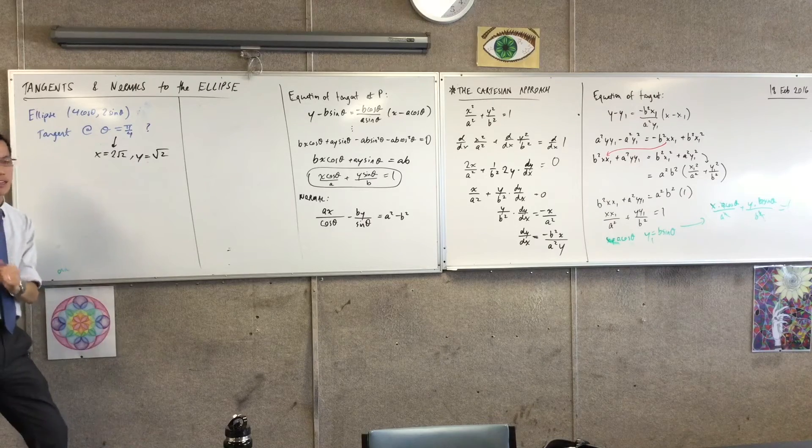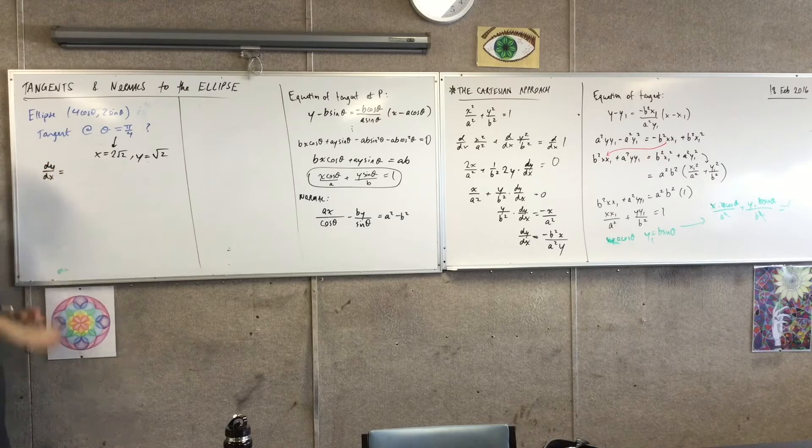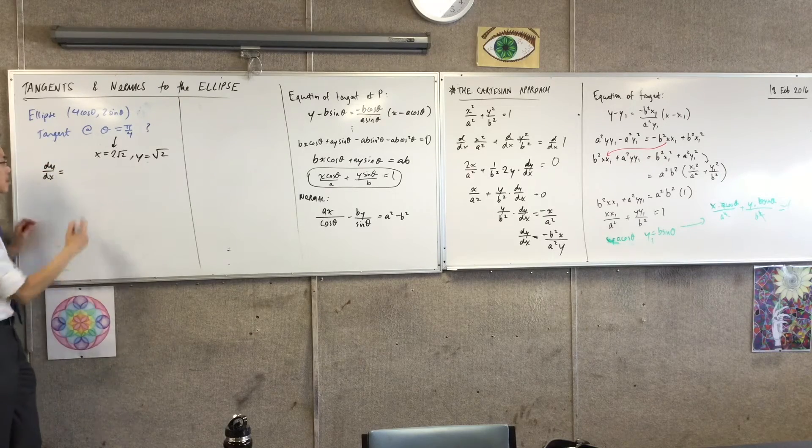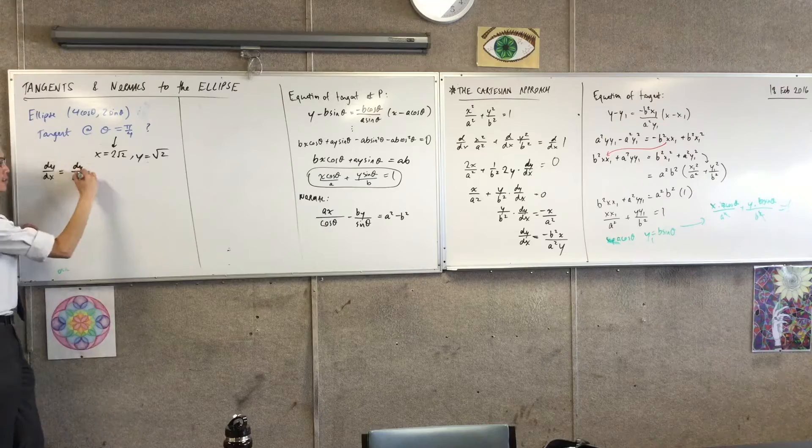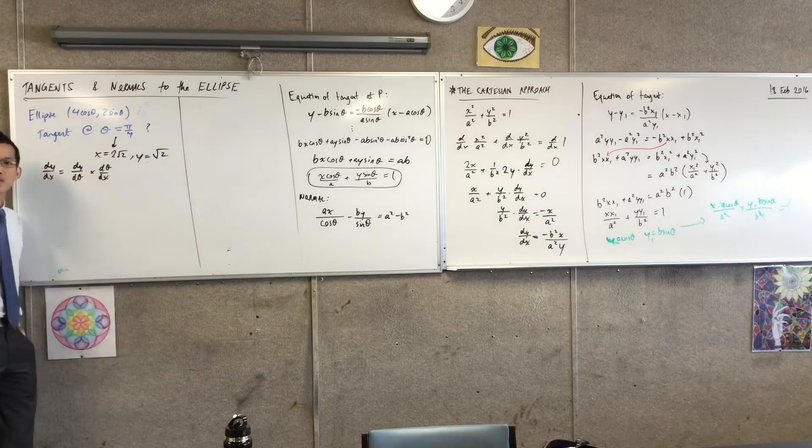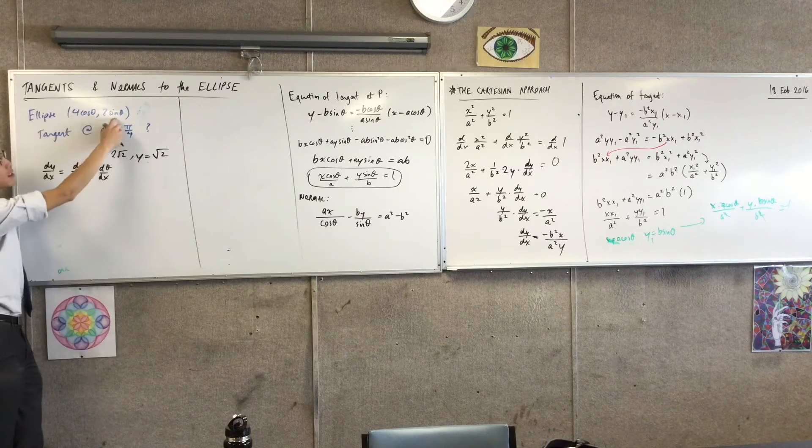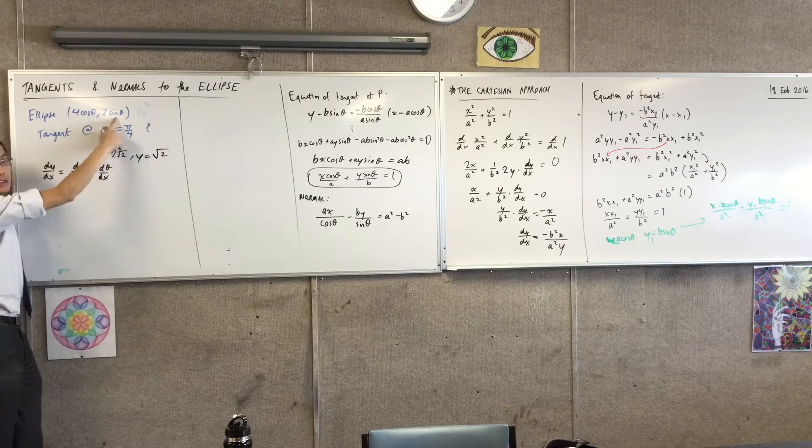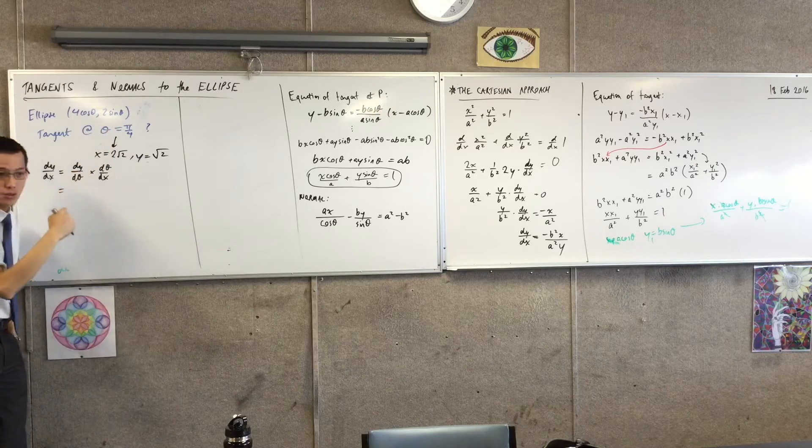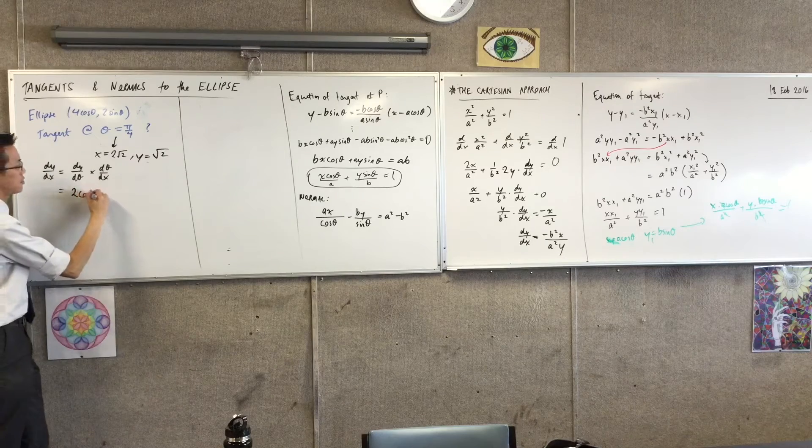Now I need a gradient. dy/dx is going to be this chain rule. What's dy/dθ? Starting with 2 sin theta, sin differentiates into cos, so this is just going to be 2 cos theta.